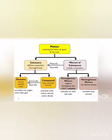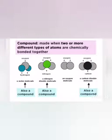We will discuss them in detail. A compound is made when two or more different types of atoms are chemically bonded together. For example, in a water molecule, two hydrogen atoms and one oxygen atom are chemically bonded together. In another example, two oxygen atoms and one carbon atom chemically join together to make a carbon dioxide molecule.